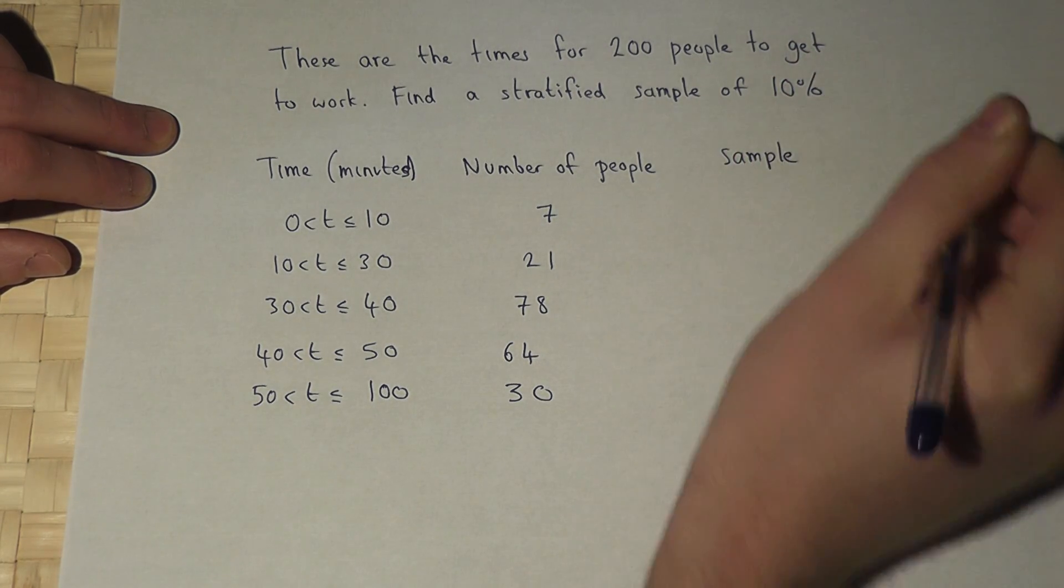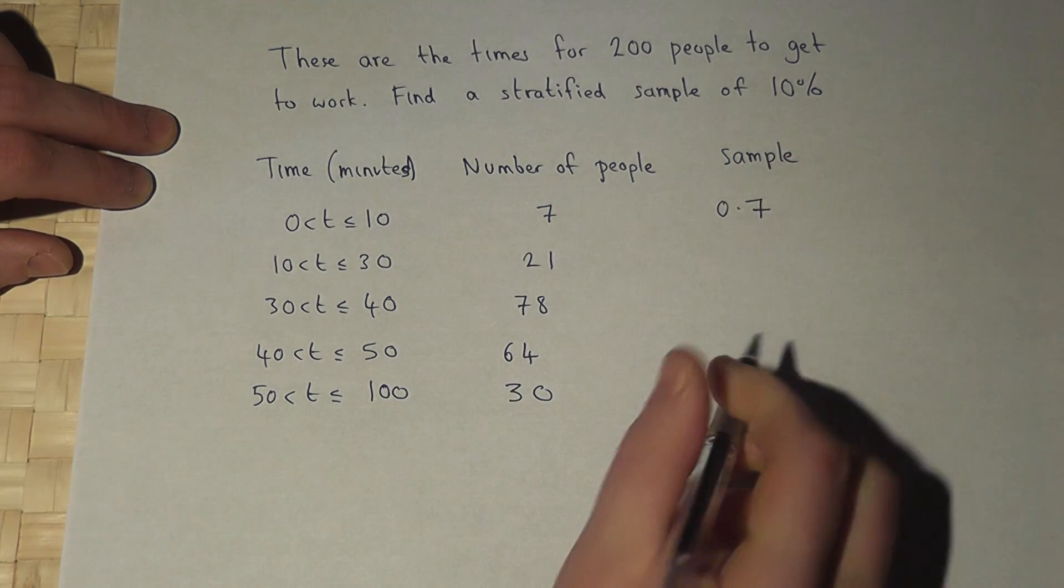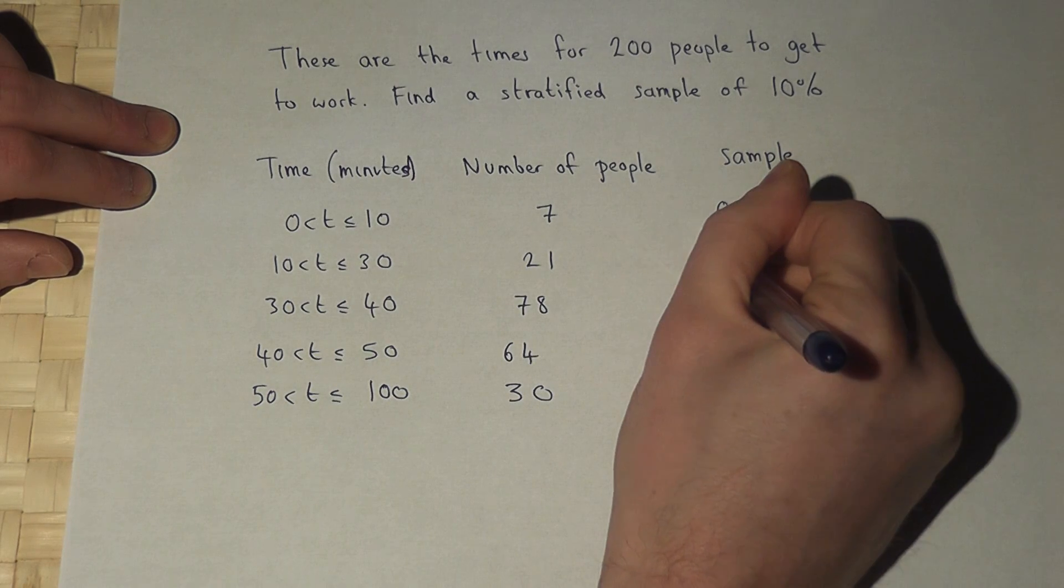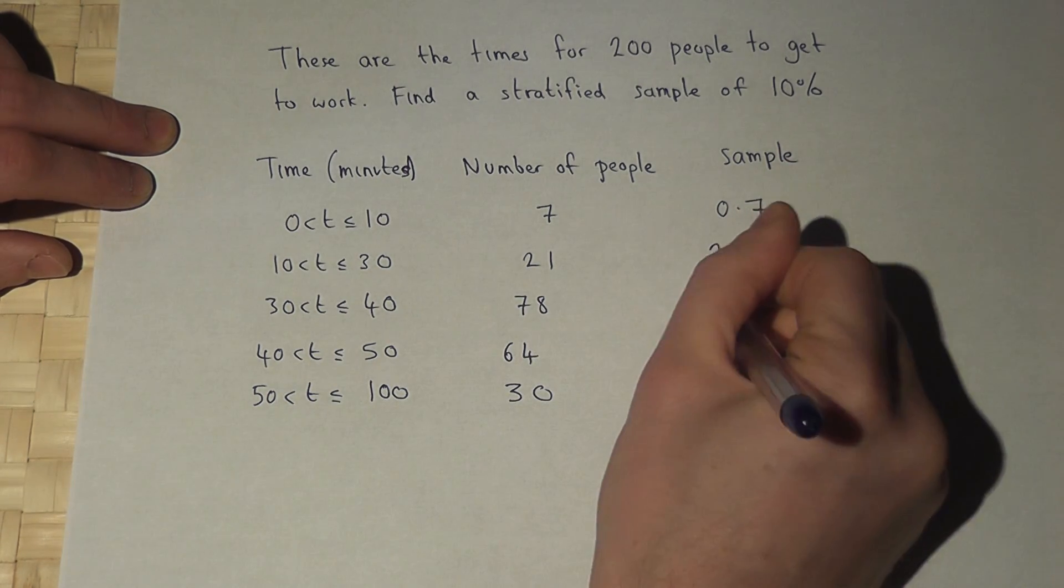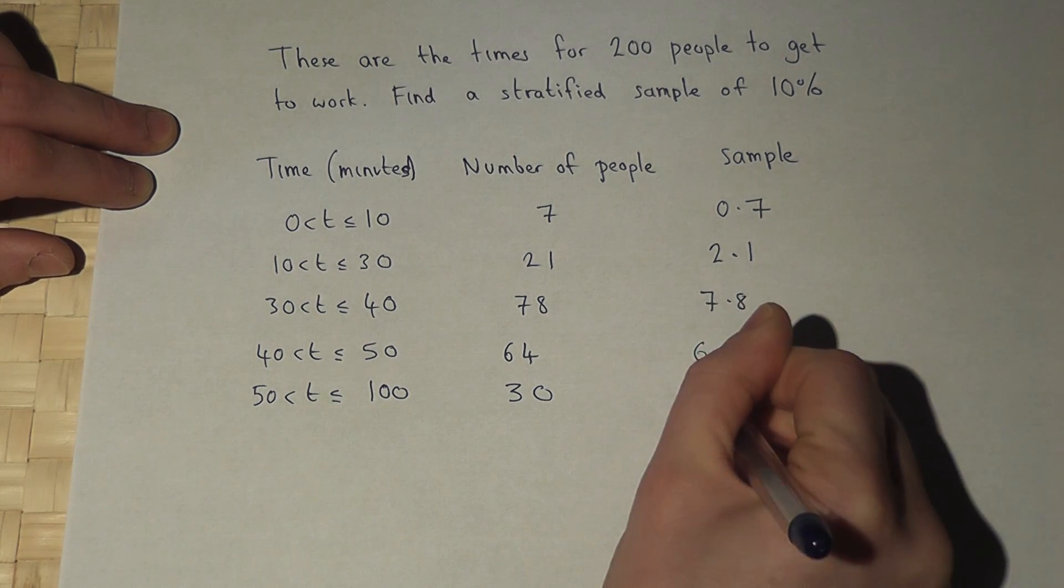So if I find 10% of 7, I get 0.7. 10% of 21 is 2.1, then 7.8, 6.4, and 3.